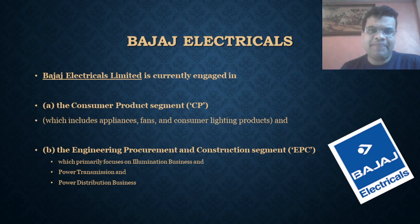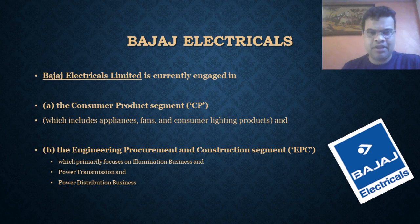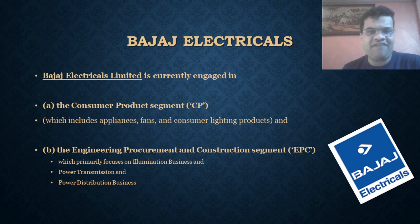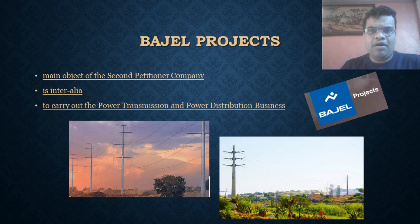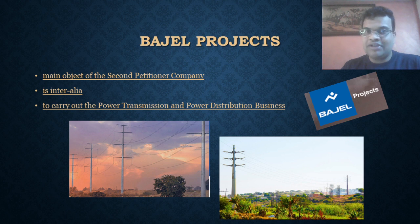Bajaj Electricals Limited announced a scheme of arrangement. Bajaj Electricals has two divisions: number one, the consumer products division, which deals with appliances, fans, lighting products, etc., and number two, the engineering procurement and construction segment (EPC), which deals with power transmission and power distribution. Bajaj Projects will now focus on power transmission and power distribution.